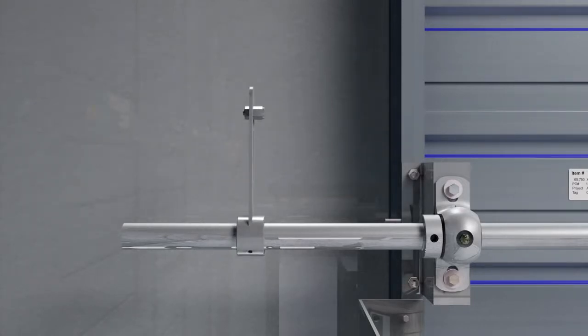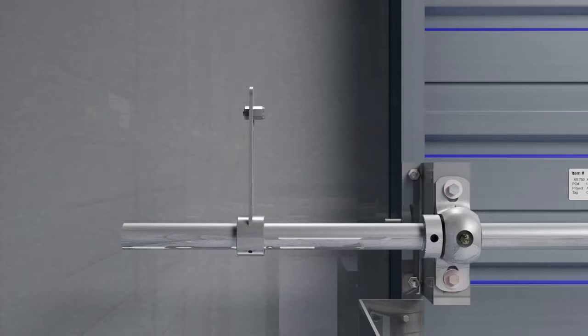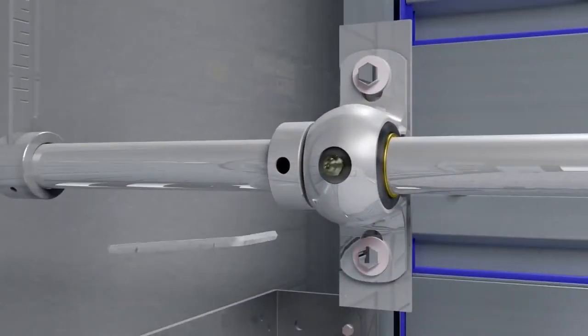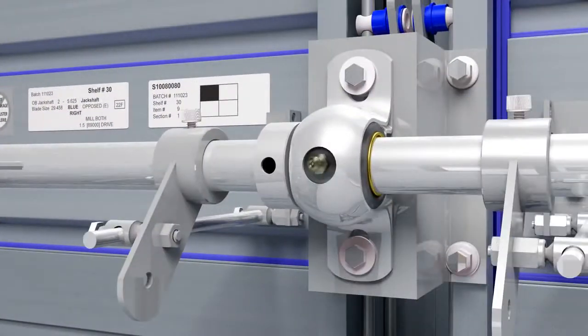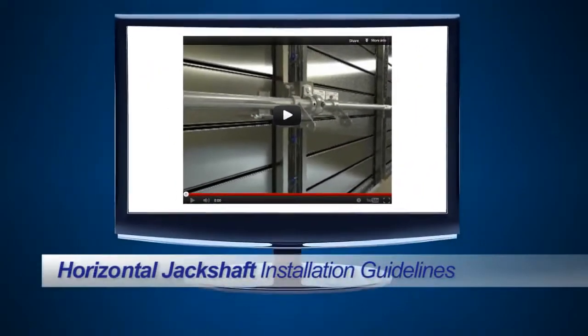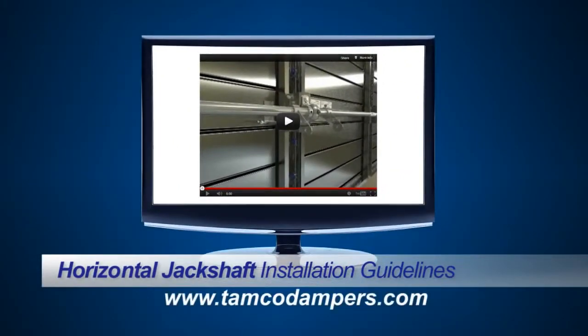If required, longer jackshaft rods can be ordered. Once the jackshaft has been installed and extended to the desired length, tighten the locking collars to secure the jackshaft rod in place. Refer to the Horizontal Jackshaft Installation Guidelines video for complete jackshaft installation instructions.